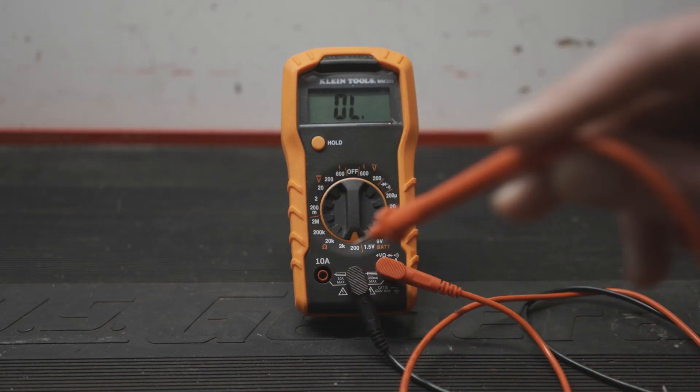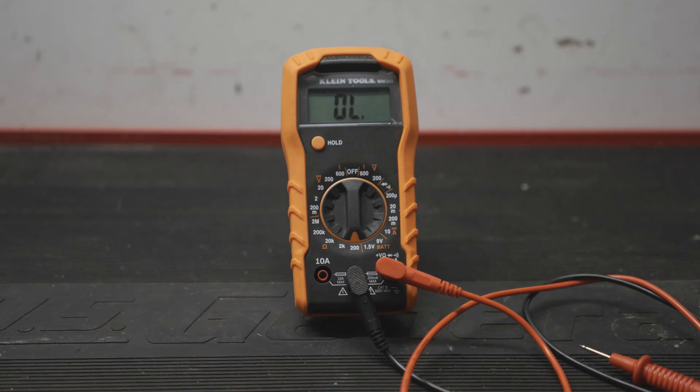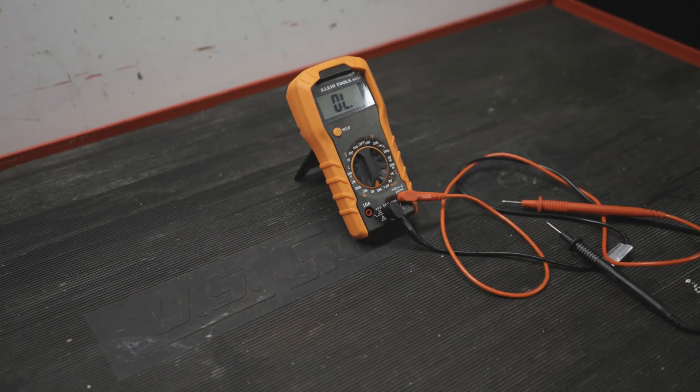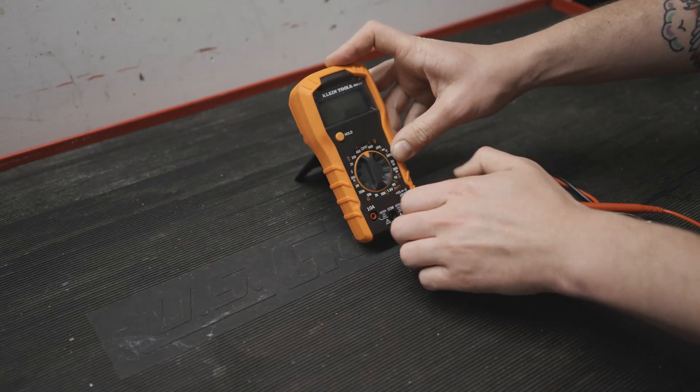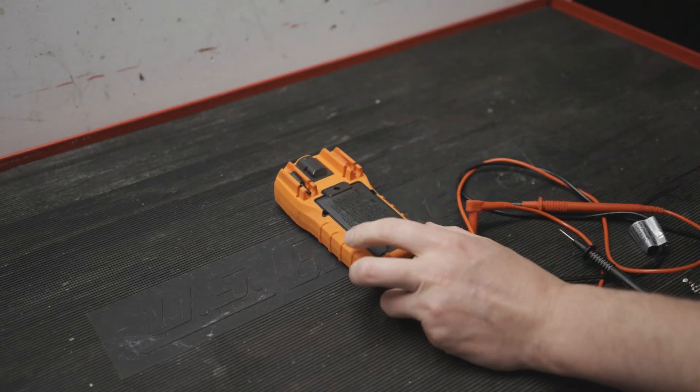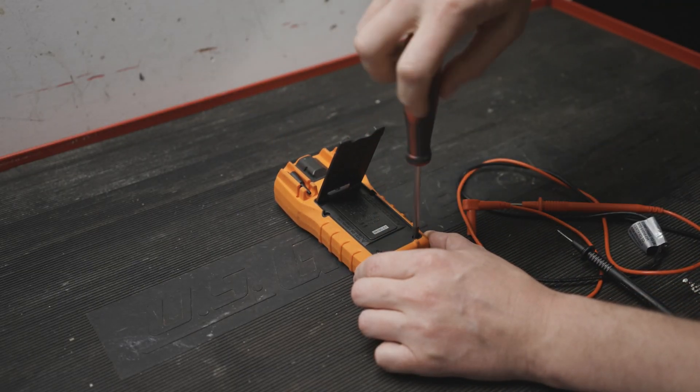Now that we've done the simple check we can open up the multimeter, double check that it's the fuses and replace them if necessary. Unless you're working with the same Klein MM300 multimeter yours may look and come apart a little differently. In my case you take out all the screws and separate the two halves.